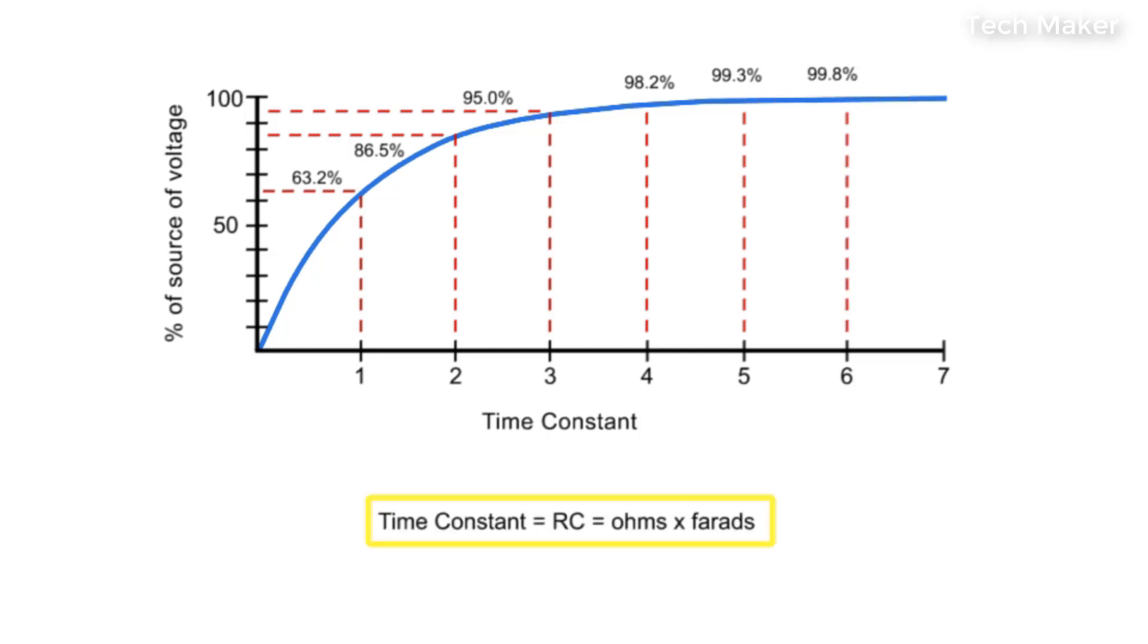A time constant in seconds is equal to the resistance of the circuit in ohms multiplied by the value of the capacitance in farads.